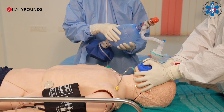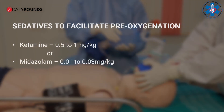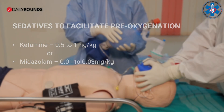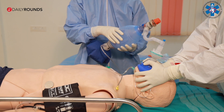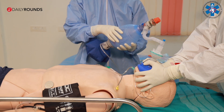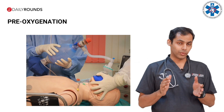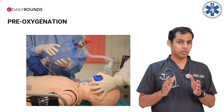If the patient is agitated due to hypoxia, pre-oxygenation may be done after giving 0.5 to 1 mg/kg of ketamine or 0.01 to 0.03 mg/kg of midazolam, depending on hemodynamic status. The patient may be positioned in a ramped-up position to facilitate pre-oxygenation and intubation. Pre-oxygenation should be continued for 3 to 5 minutes depending on the patient's condition.